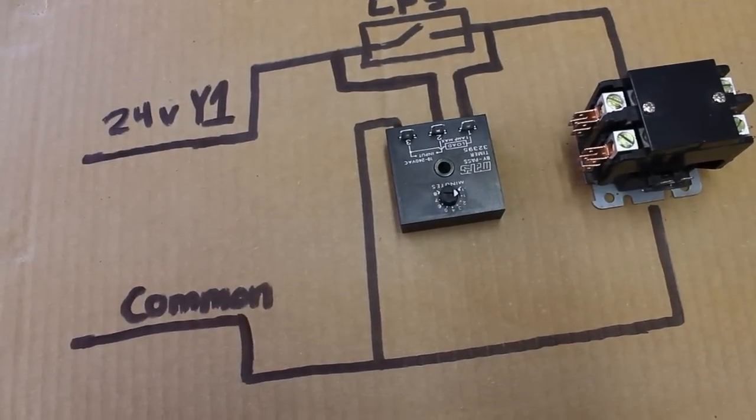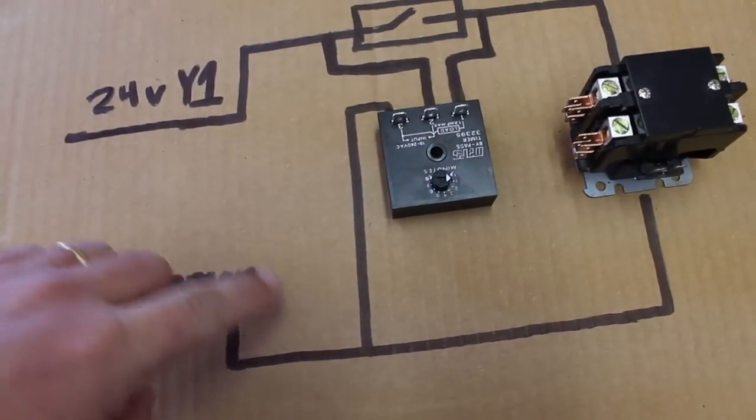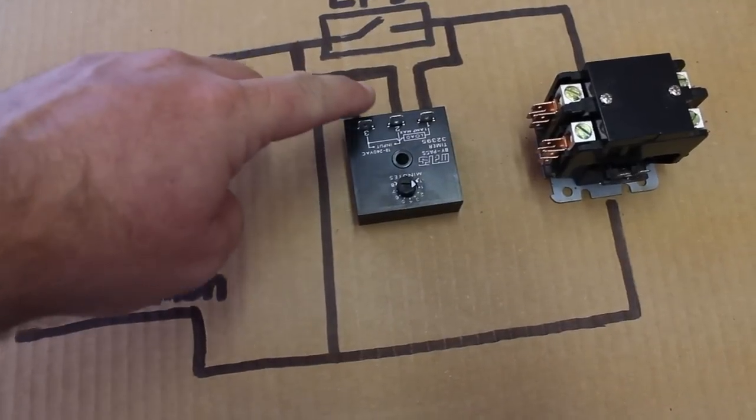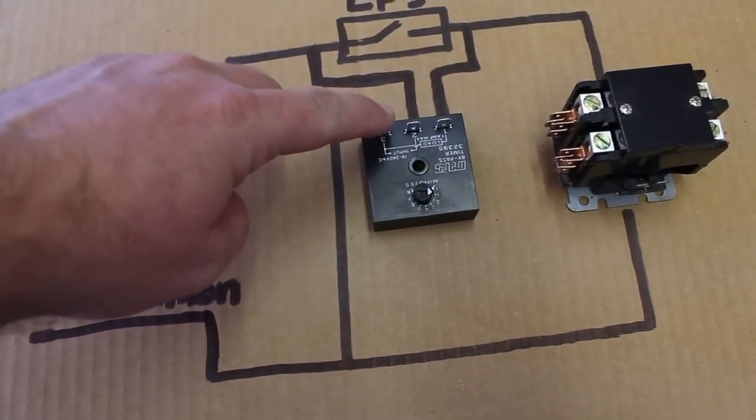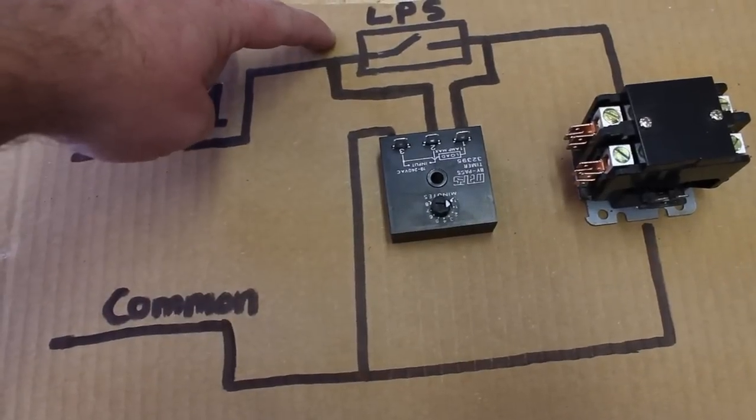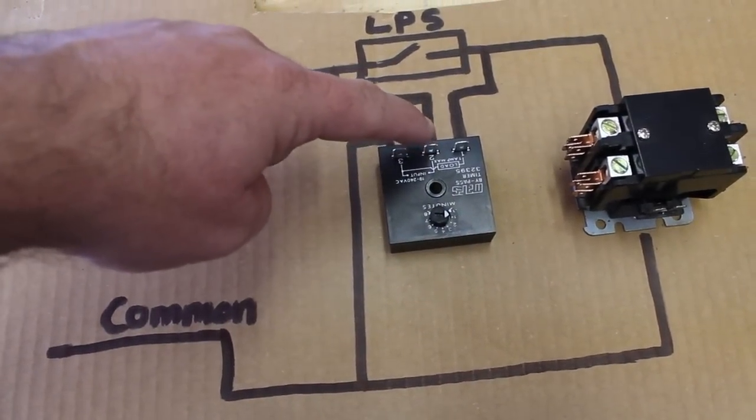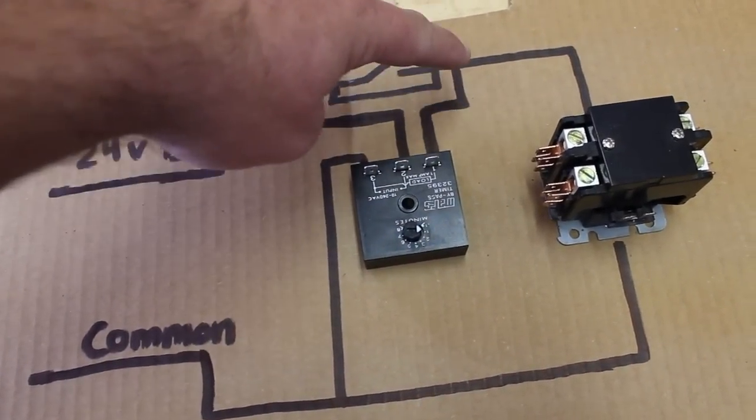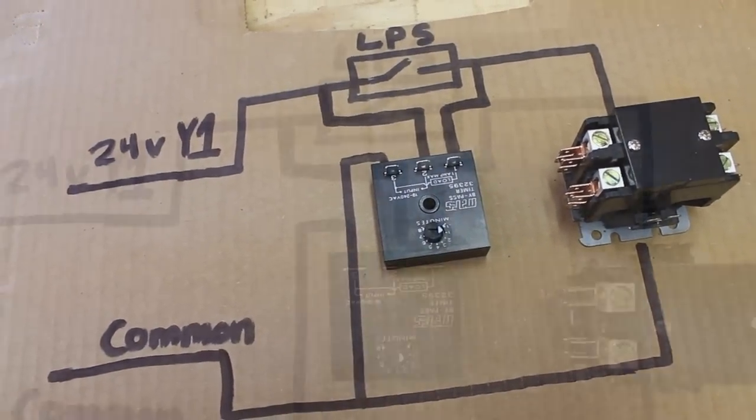As you can see, we have common coming into terminal number three on the relay. One side of Y1 before the low pressure switch comes into number two, and number one goes back to the other side. Let's take a closer look at that.